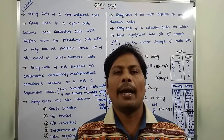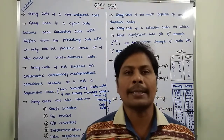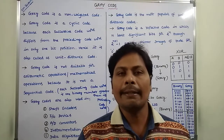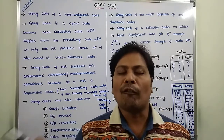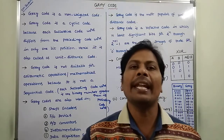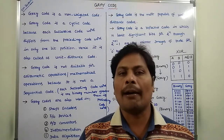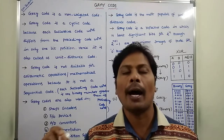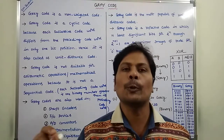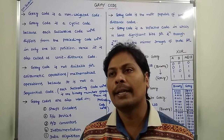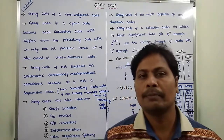Today I am giving a lecture on grey code in digital logic design, or switching theory and logic design. Grey code is one type of binary code. Binary code means the digital data that can be represented, stored and transmitted as a group of binary bits. This group is called a binary code. Hence we can say that grey code is one type of binary code.